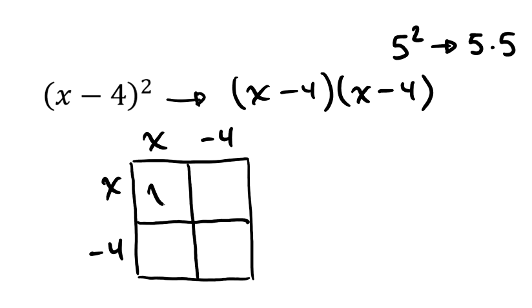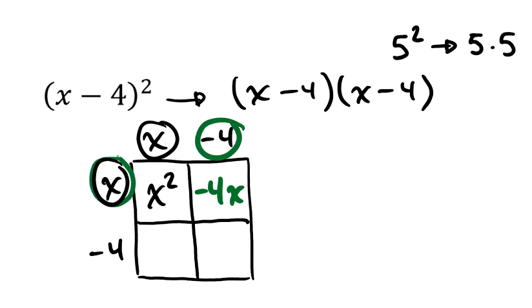The first part that we see is the x squared. That's this x times this x. The next thing that we see is negative 4x. And that's what I get when I multiply this negative 4 times this x. Also, I would get another negative 4x. That's what I get when I multiply this x times this negative 4. And then the last thing that I get is a positive 16. That's the product of negative 4 times negative 4.